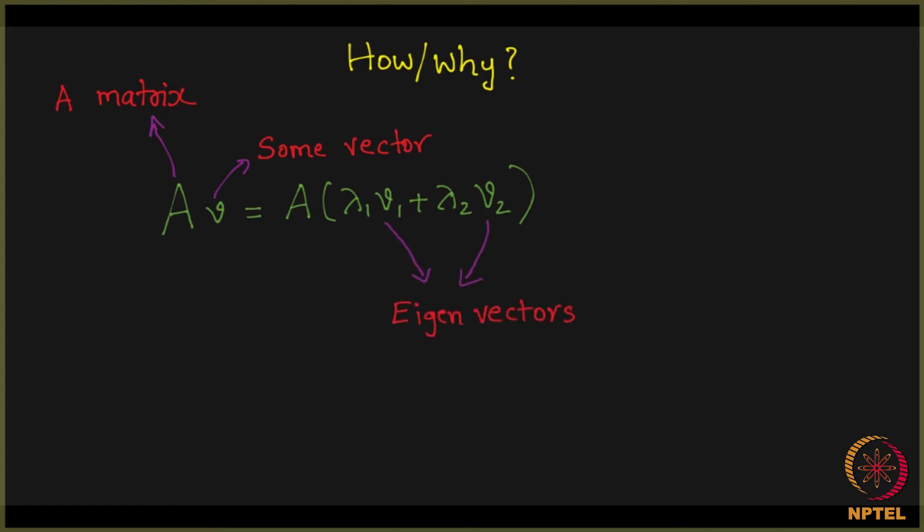So this V1, V2 are eigenvectors and alpha, beta - actually let me correct, lambda 1, lambda 2 are eigenvalues. We observed it already. So far so good. So all I am saying here is any given vector V, if a matrix A is applied on it, then you can always see it as A being applied on a linear combination of eigenvectors V1 and V2, no matter what V you choose.